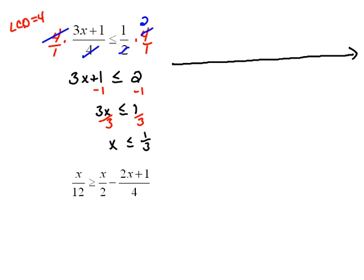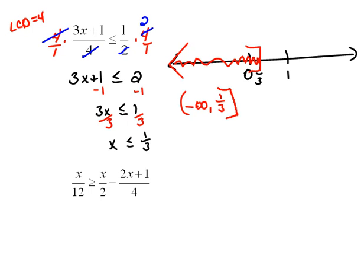In a graph if this is 0 and let's say this is 1, 1 third would be right about there. The things that are less than or equal to 1 third would start at 1 third including it because of equality, and going to the left. So written as interval notation this would be negative infinity all the way up to 1 third. Parentheses for infinity, a bracket for the 1 third.